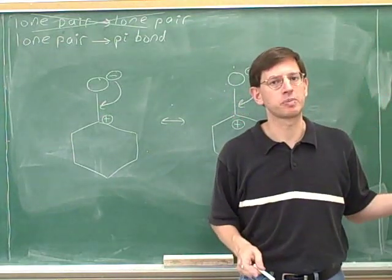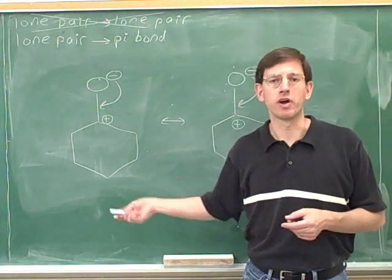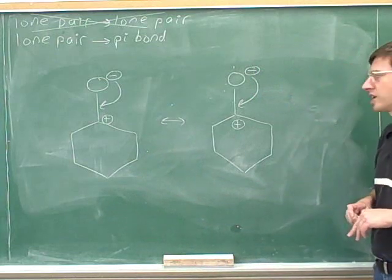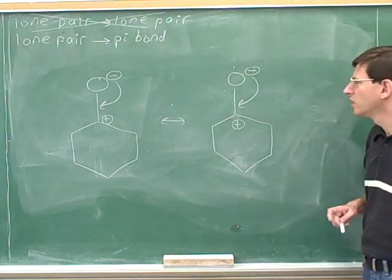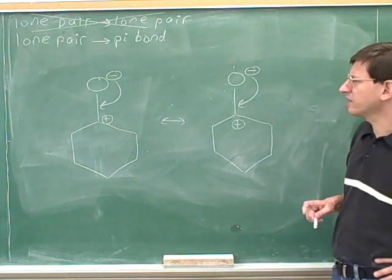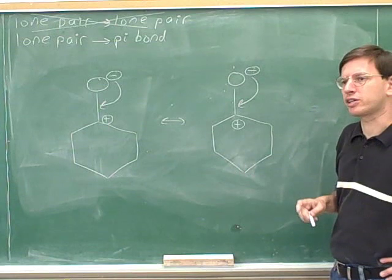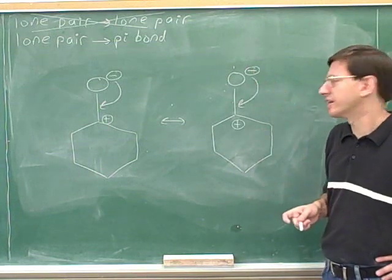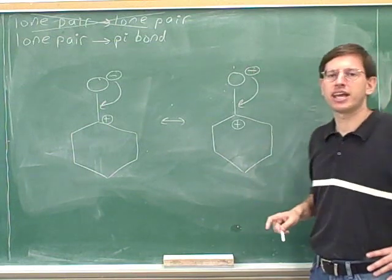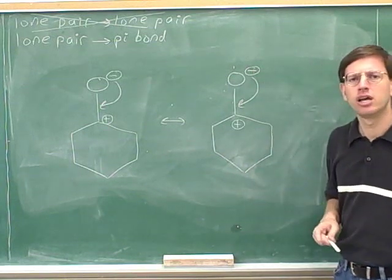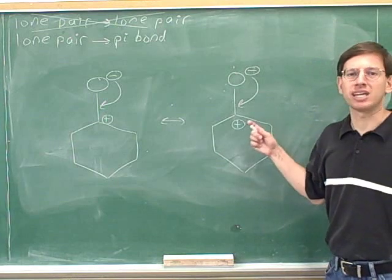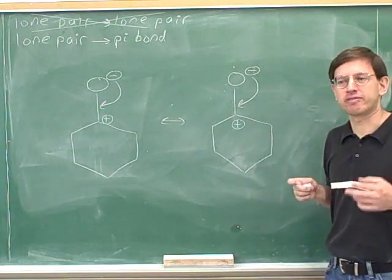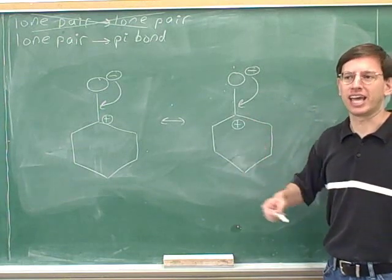Where are the electrons coming from? Where are the electrons going to? Here we have something a little bit new. In all the previous pictures, the tail was on a lone pair. But here the tail is on the negative charge. What does that mean? It actually means that the electrons are coming from a lone pair again.